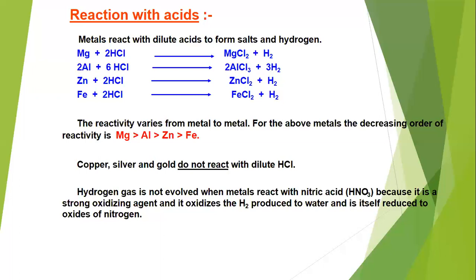The nitrogen oxide product — N₂O, NO, or NO₂ — depends on the strength of nitric acid used. There are two metals, manganese (Mn) and magnesium (Mg), which if treated with very dilute 1% nitric acid — meaning 1 ml nitric acid in 99 ml distilled water — will produce their nitrates plus hydrogen gas.